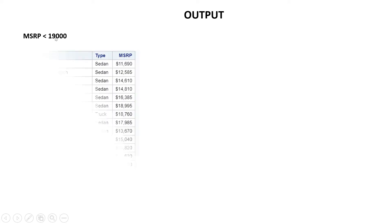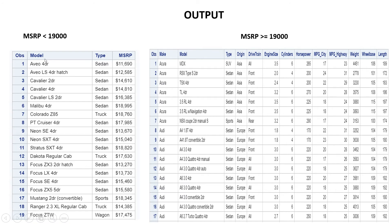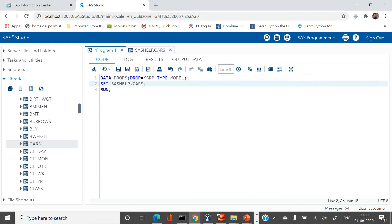Next we have the OUTPUT statement. We have the same CARS dataset but this time we need to create two output tables. The first should contain rows where MSRP is less than $19,000 and keep only model, type, and MSRP. The second table should have rows where MSRP is greater than or equal to $19,000 but should drop those three variables — keeping all other variables. We'll use the OUTPUT option along with IF logic.